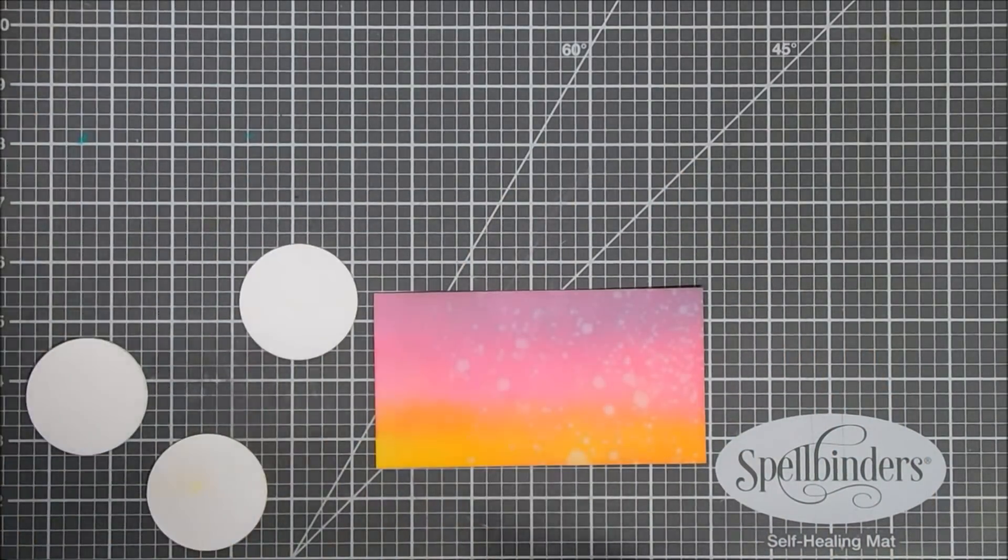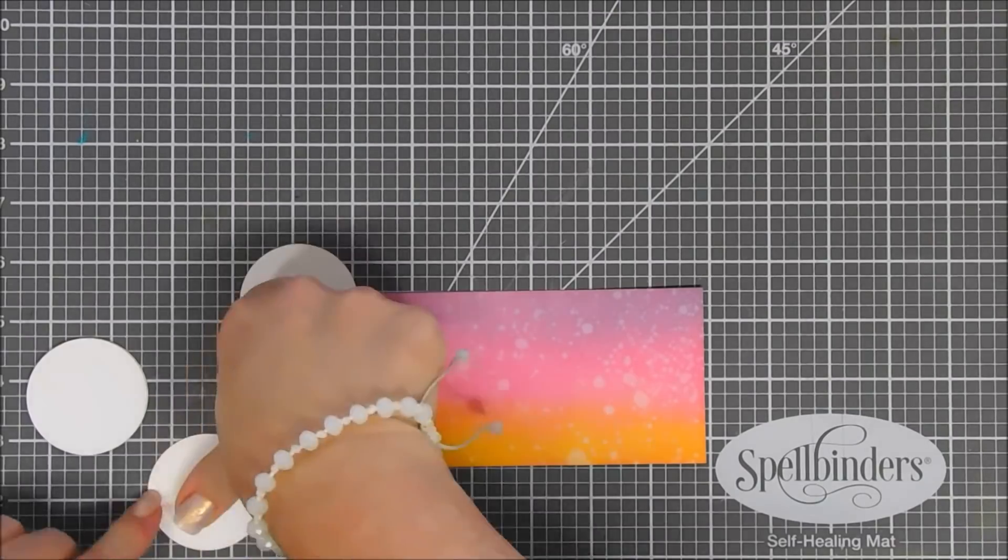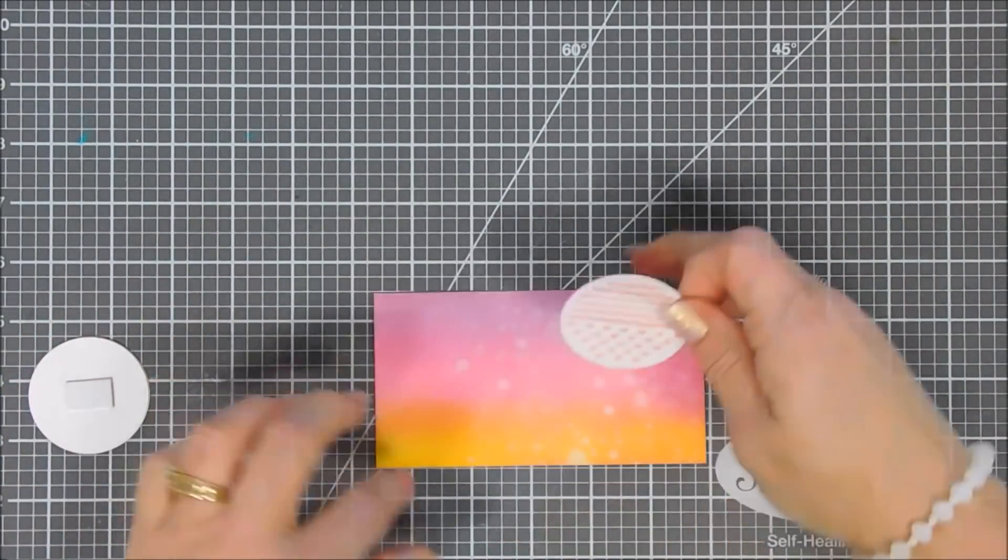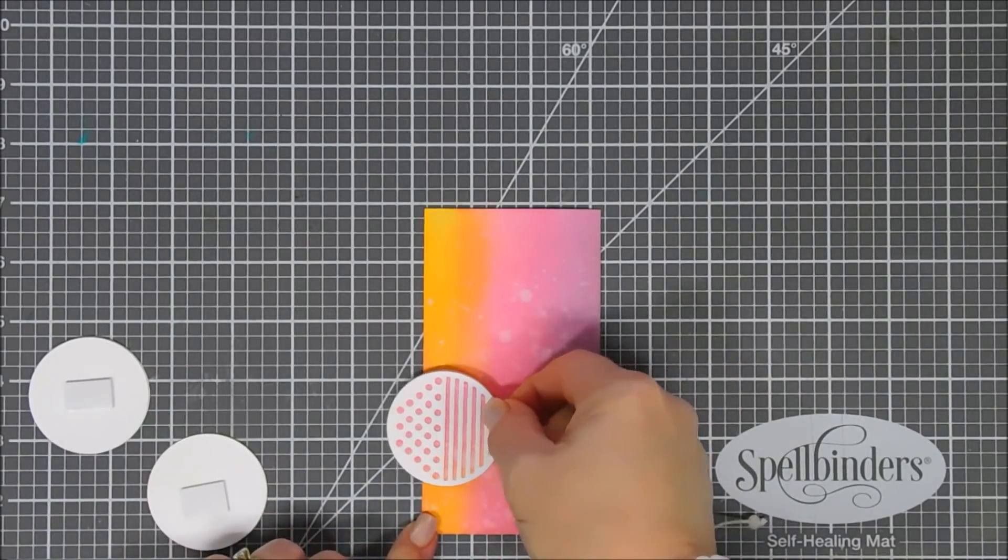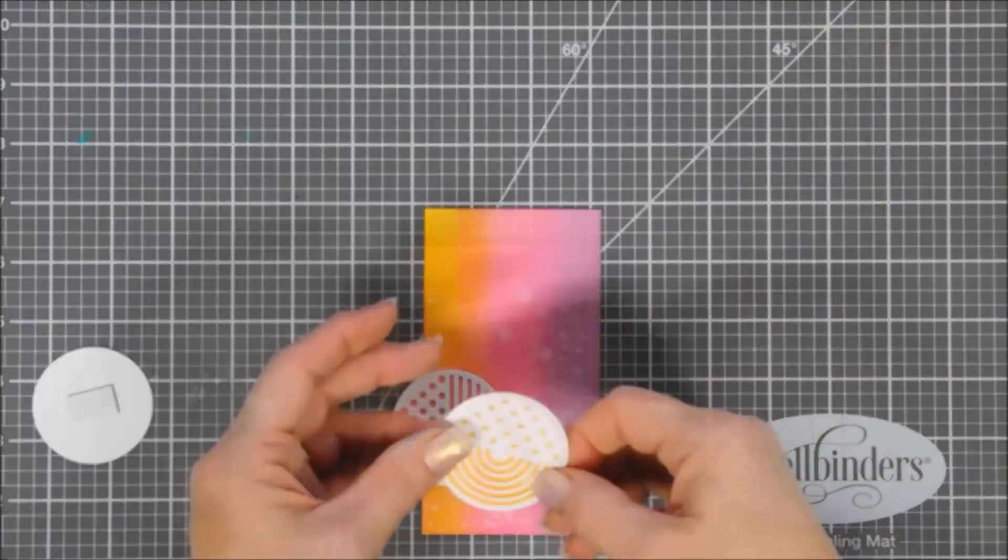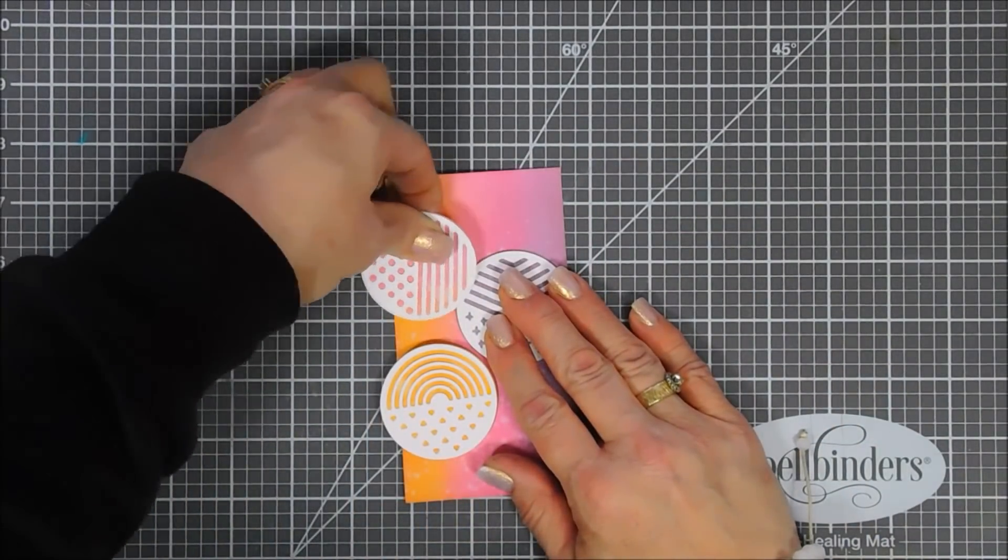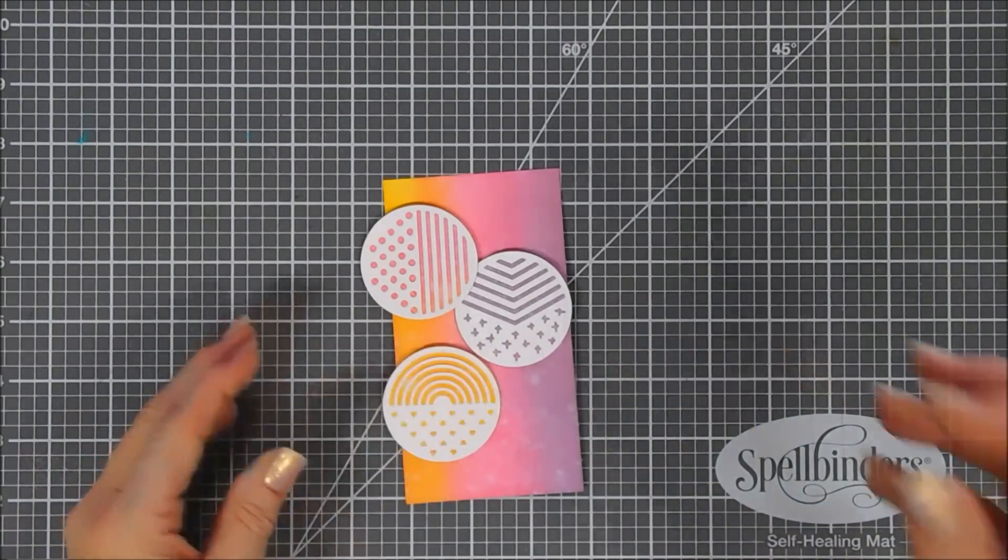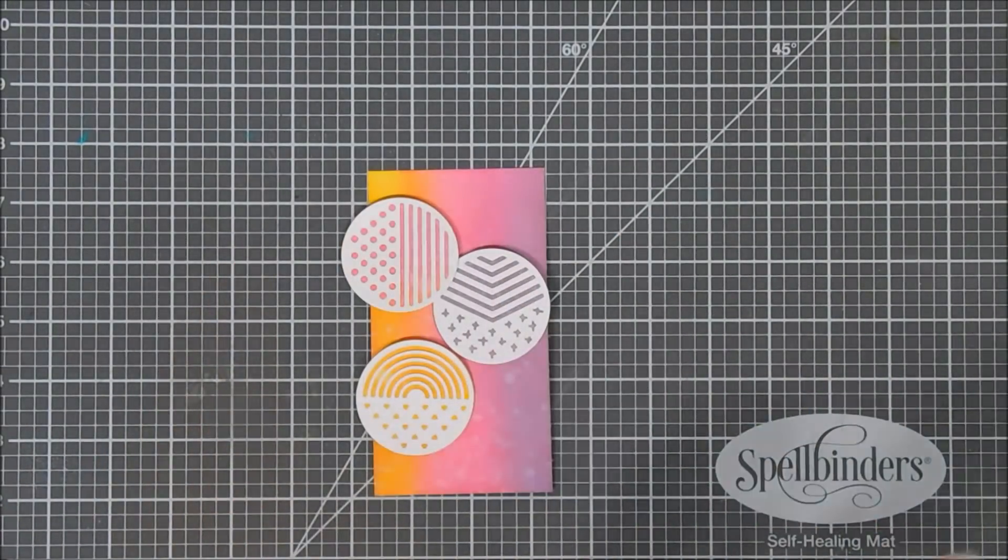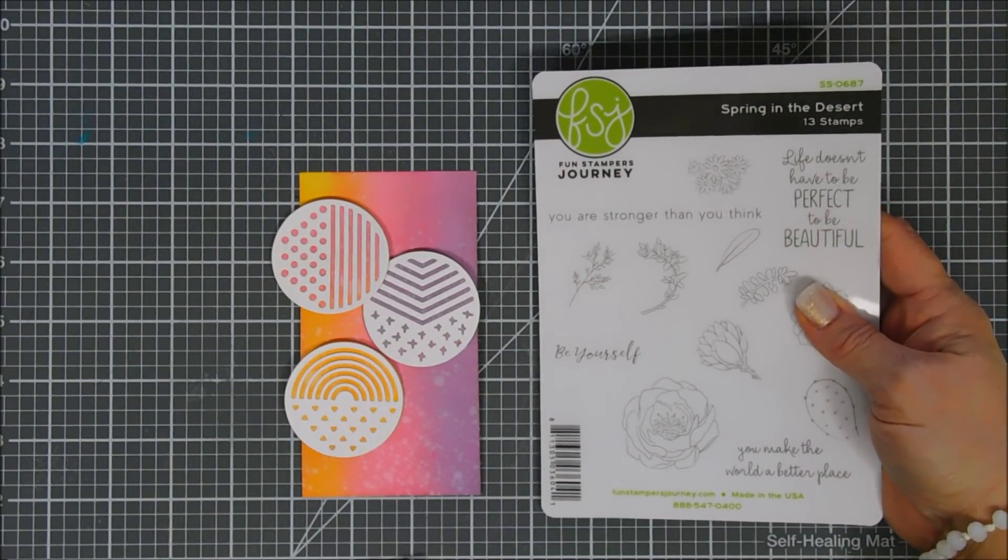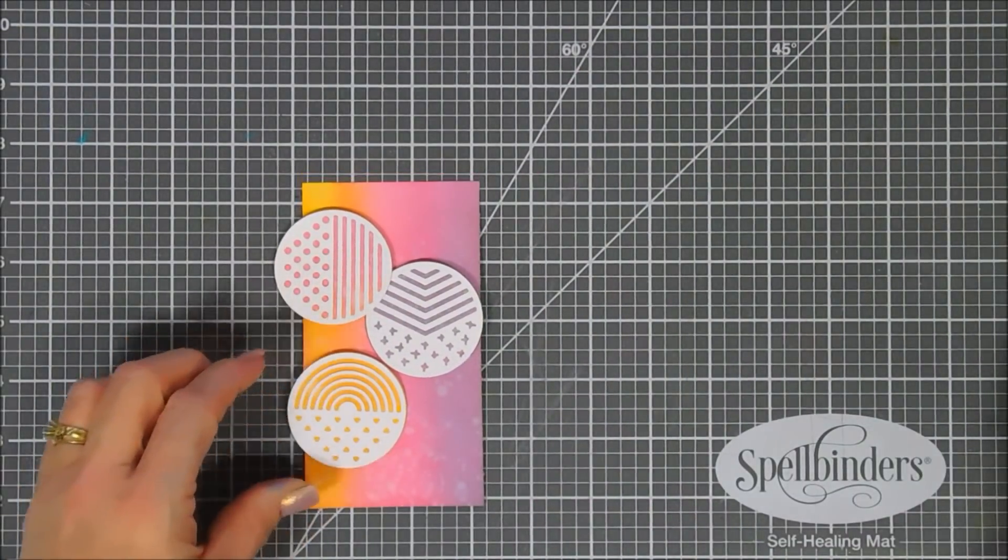Okay for card number one we're going to start off by adding some foam adhesive behind each one of our circles. We'll just remove the release paper, turn our panel over. And we're just going to kind of just add them to our panel. And I think this is going to look great. I'm just making sure that my lines and the arch ones, the rainbow one basically, is up and down basically.